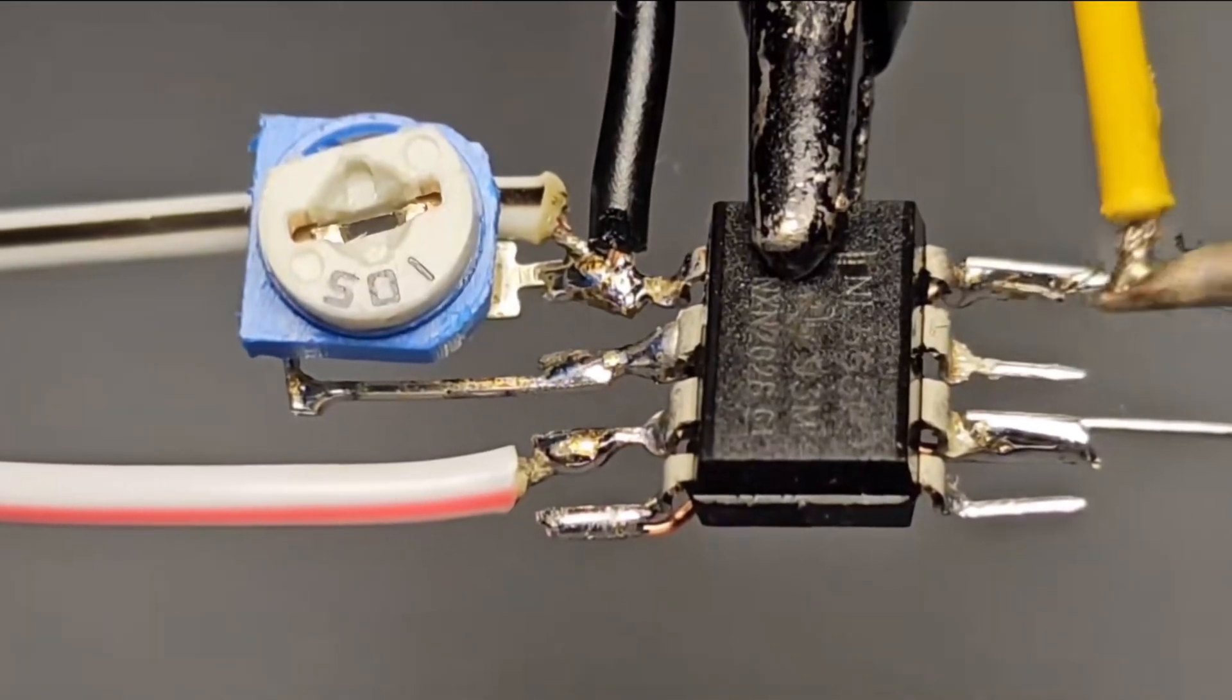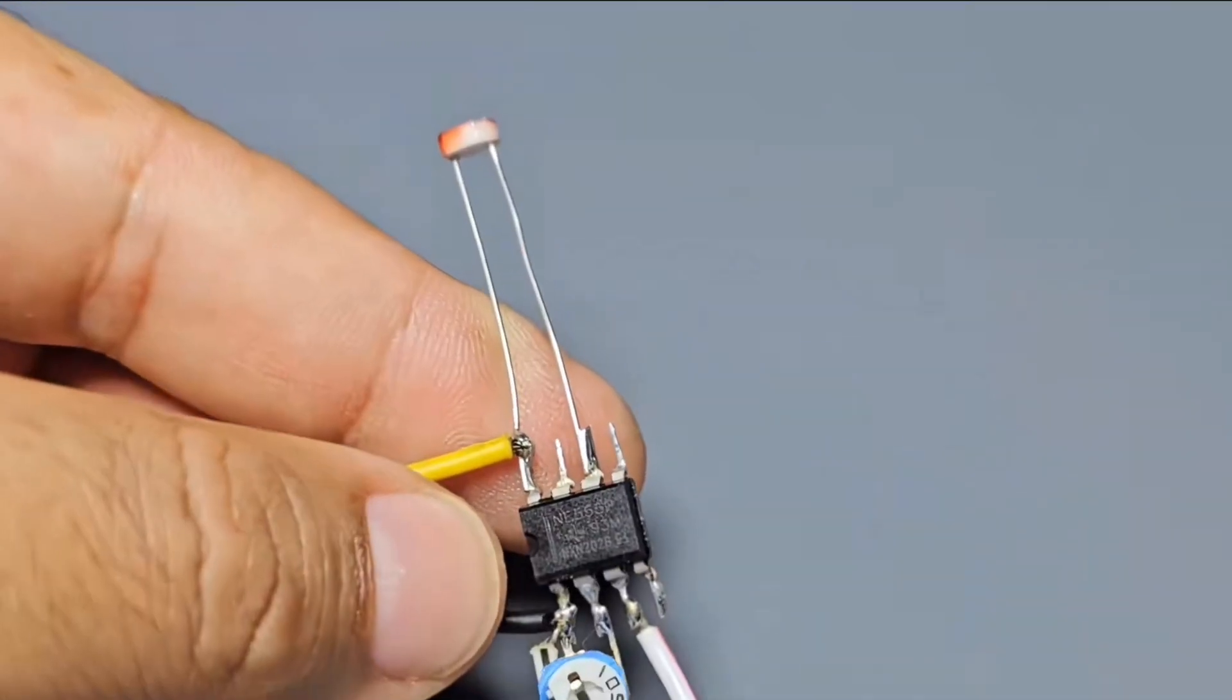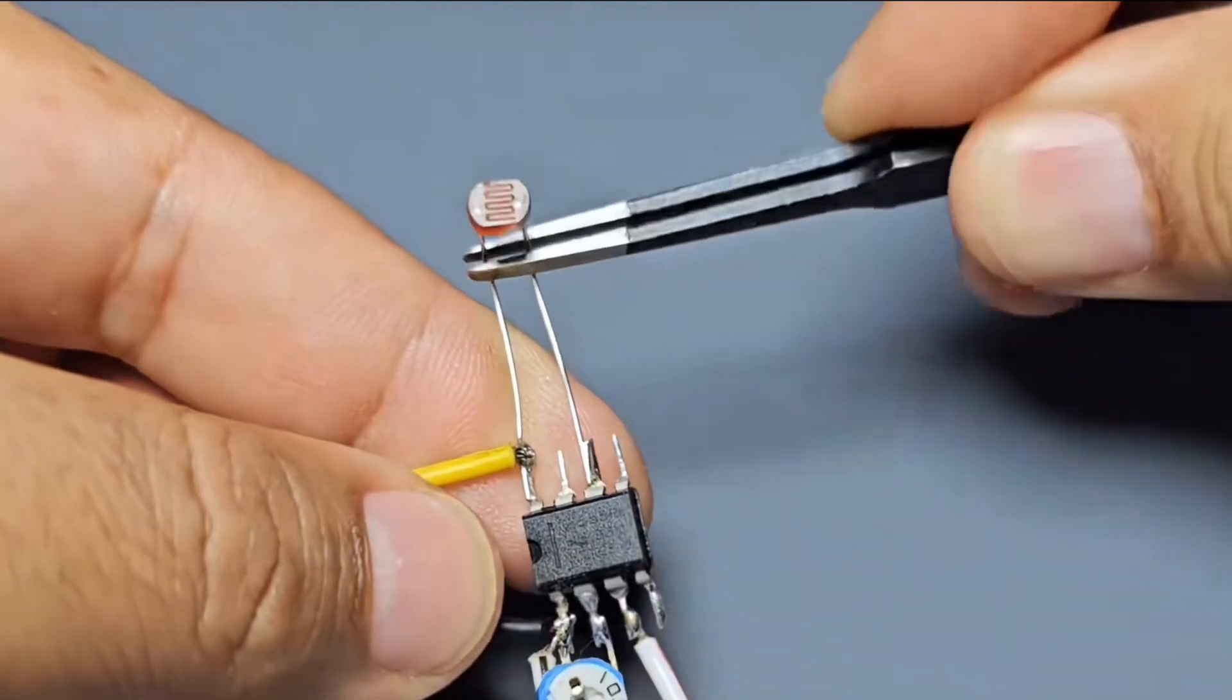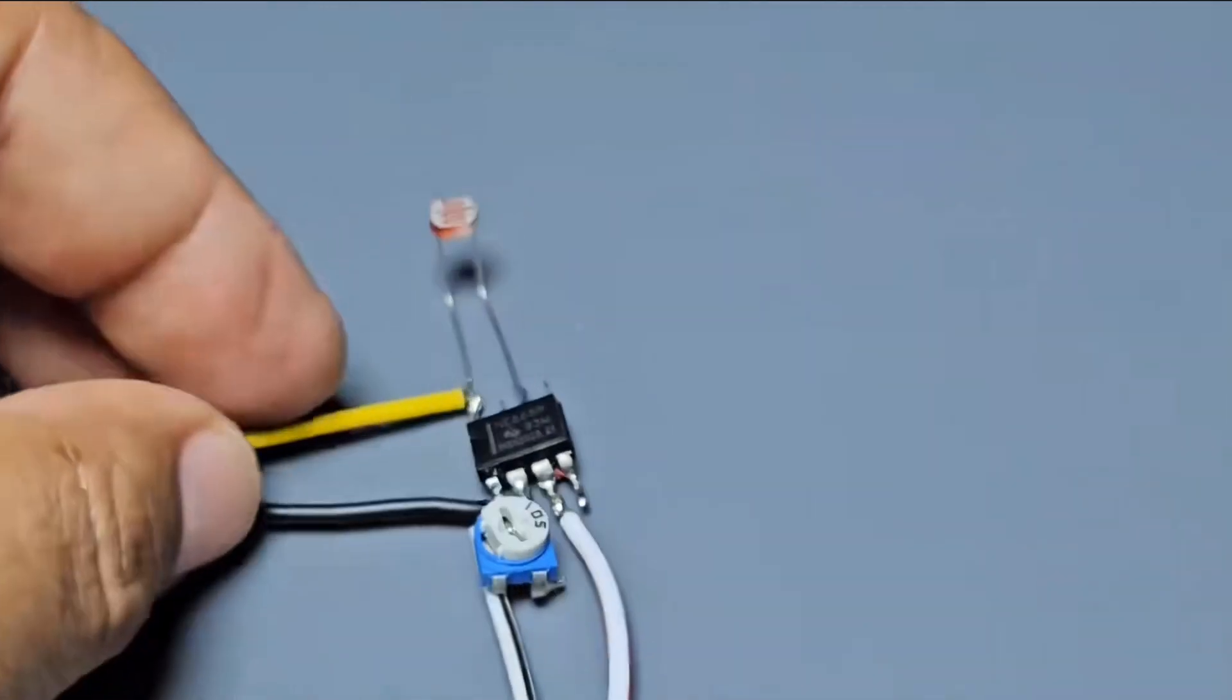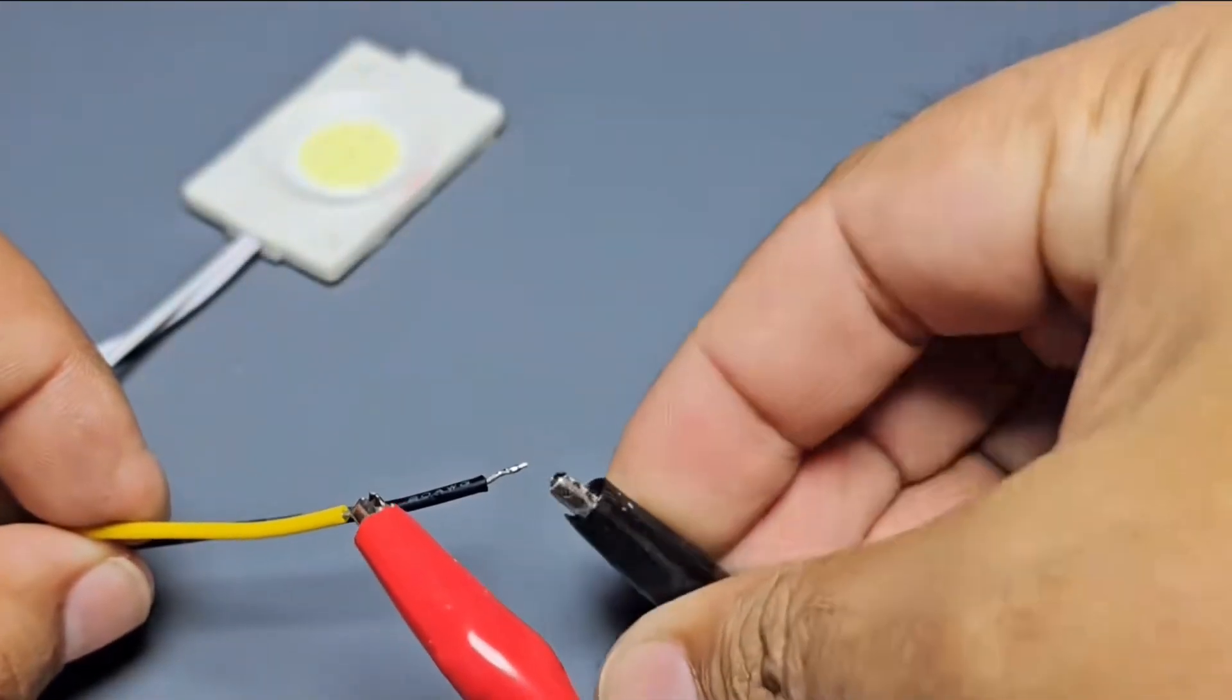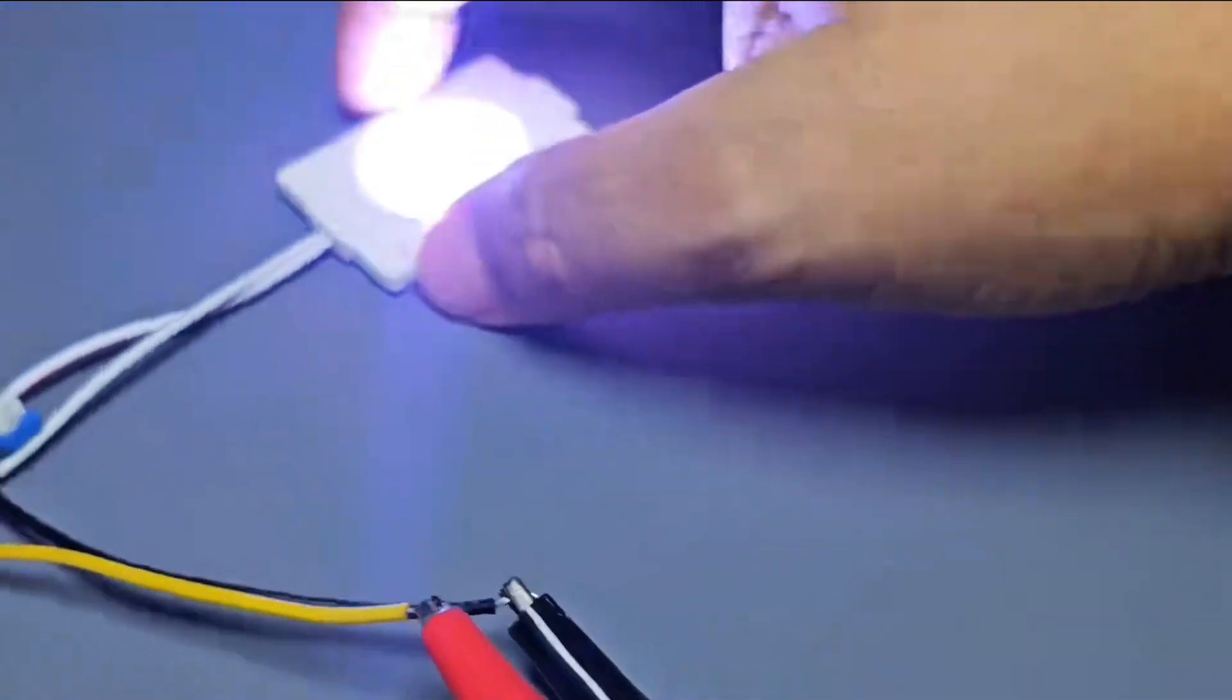The power supply range is 4.5 volts to 18 volts DC, so the load can also use 4.8 volts to 18 volts. Because the output is provided by the 555 chip itself, the load current cannot exceed 200 milliamperes.